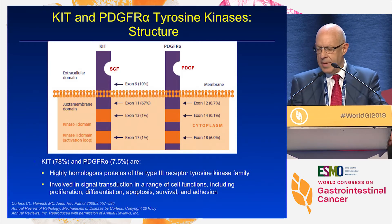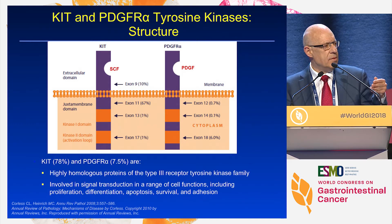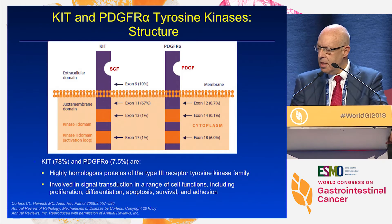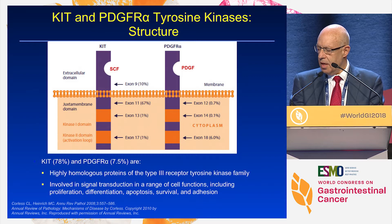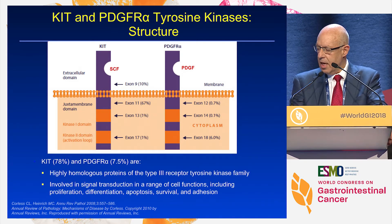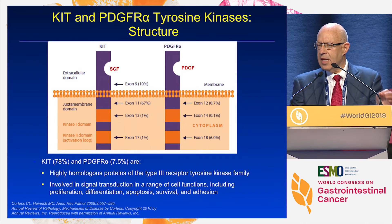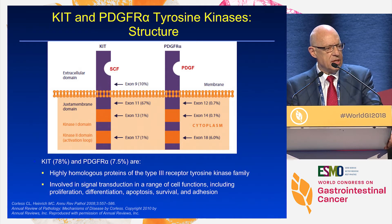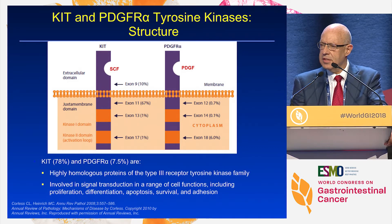This is the schematic of the two main genes involved in GIST, and in a sense this is the prototype for driver mutations. You can see on the left the KIT gene and the PDGFRα gene. The KIT gene is mutated in about 78% of patients, PDGFRα in about 7.5% of patients. Within the KIT gene, exon 11 is the most common mutation. If there's any central message to this talk, it's the importance of looking at mutations — it helps us understand the biology of this disease and the new treatments coming through.